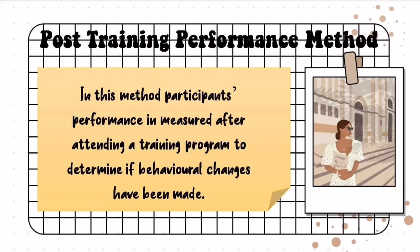Earlier we discussed extent of learning. Now let us talk about the most common approaches used to determine the effectiveness of training programs. First is the post-training performance method. In this method, participants' performance is measured after attending a training program to determine if behavioral changes have been made. As the name suggests — post-training means after. Here, the company assesses whether any improvement occurred after the training phase.